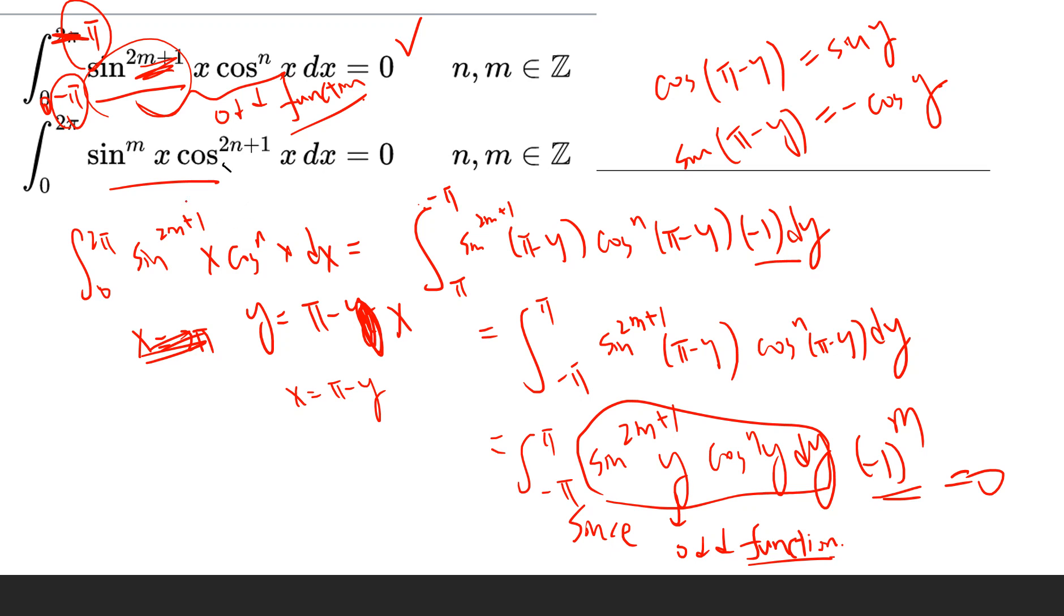So the same reason, the same thing is that we can work this into π to negative π, sine mx, cosine 2n plus 1 x, dx.